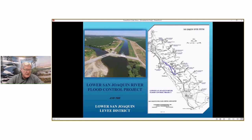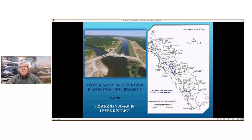This photo is of the location we call the control structures bifurcation, which is the head of the bypass system. The map on the right is the location of the flood project relative to the San Joaquin River system. As you can see in the blue, we're pretty much in the central, you can see all the way down south to Tulare Lake Basin and all the way up north to the Delta.